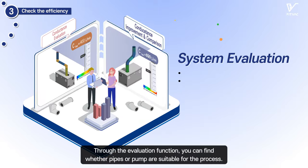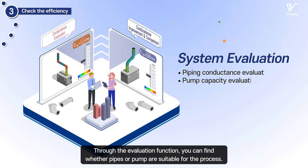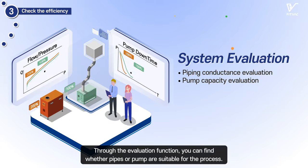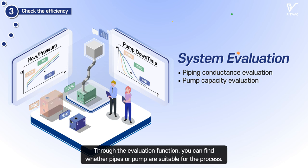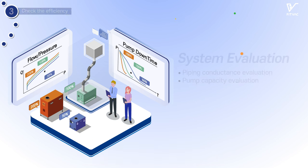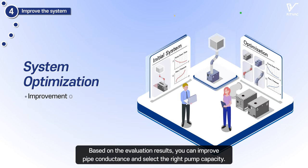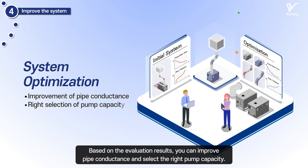Through the evaluation function, you can find whether pipes or pump are suitable for the process. Based on the evaluation results, you can improve pipe conductance and select the right pump capacity.